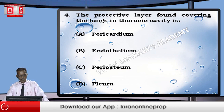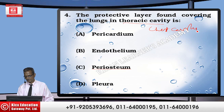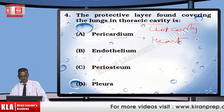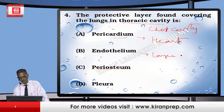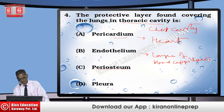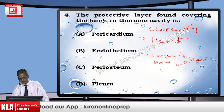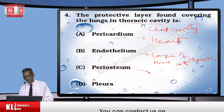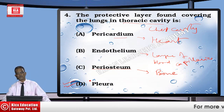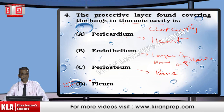Question: The protective layer found covering the lungs in the thoracic cavity is which of the following? Pericardium is the outermost protective layer of the heart, not the lungs. Endothelium is the layer of blood capillaries. What we are left with is pleura — the pleura is the protective layer found in the chest cavity that provides protection and mechanical support to the lungs and their lobes.